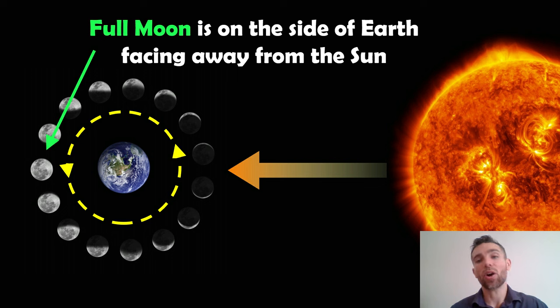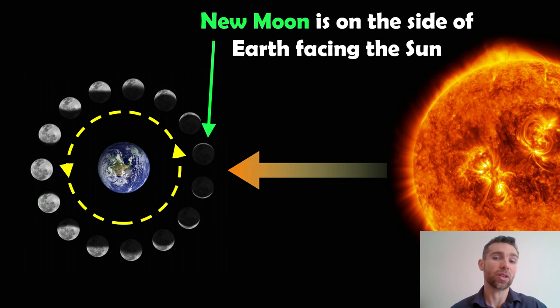The full moon occurs on the opposite side of Earth from the sun because we have to see the sunlight reflecting off it. The face of the moon that faces towards the sun is the one we see illuminated. A new moon occurs on the opposite side because the face of the moon facing the Earth is not illuminated by the sun. The new moon is always between the Earth and the sun.